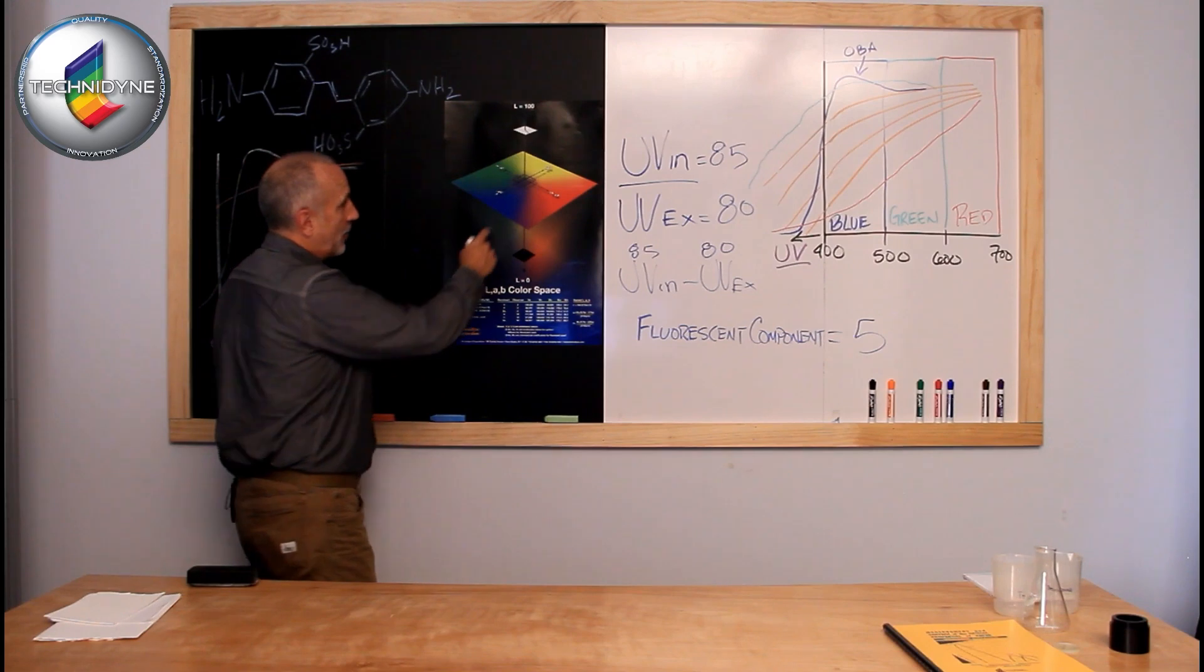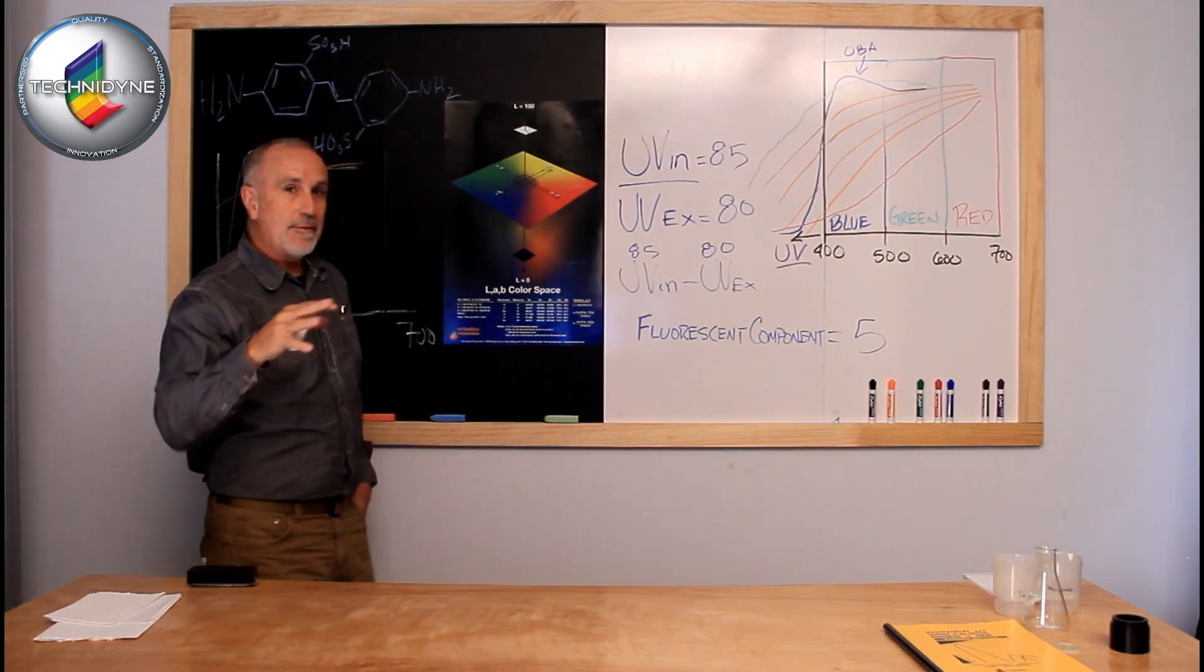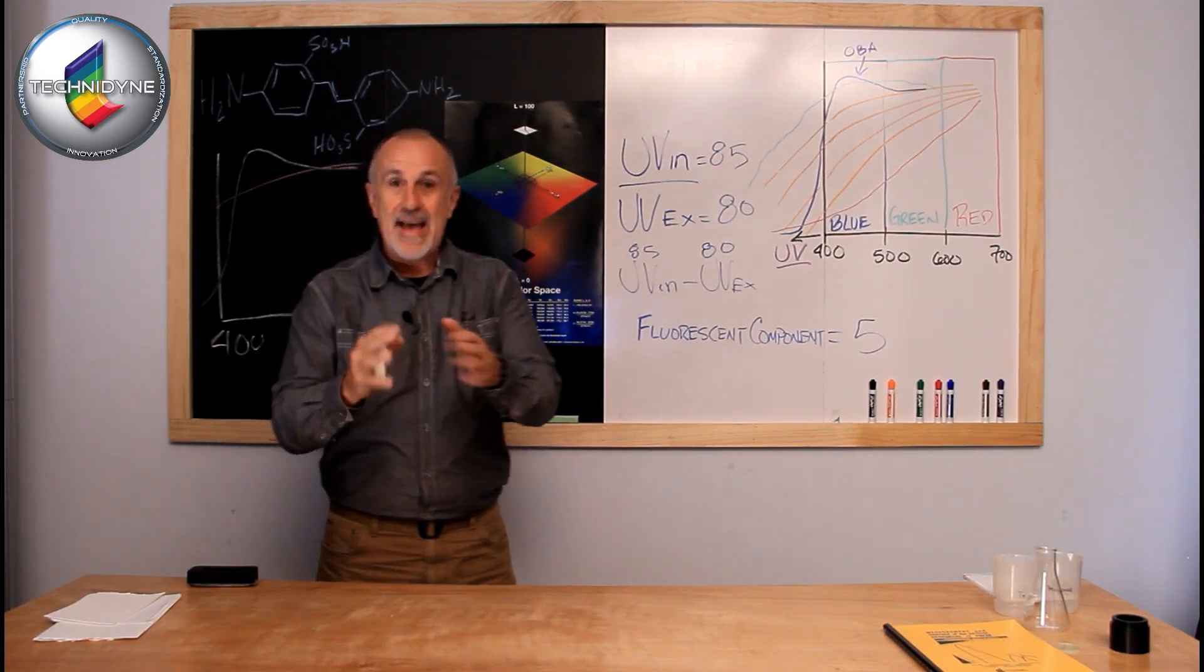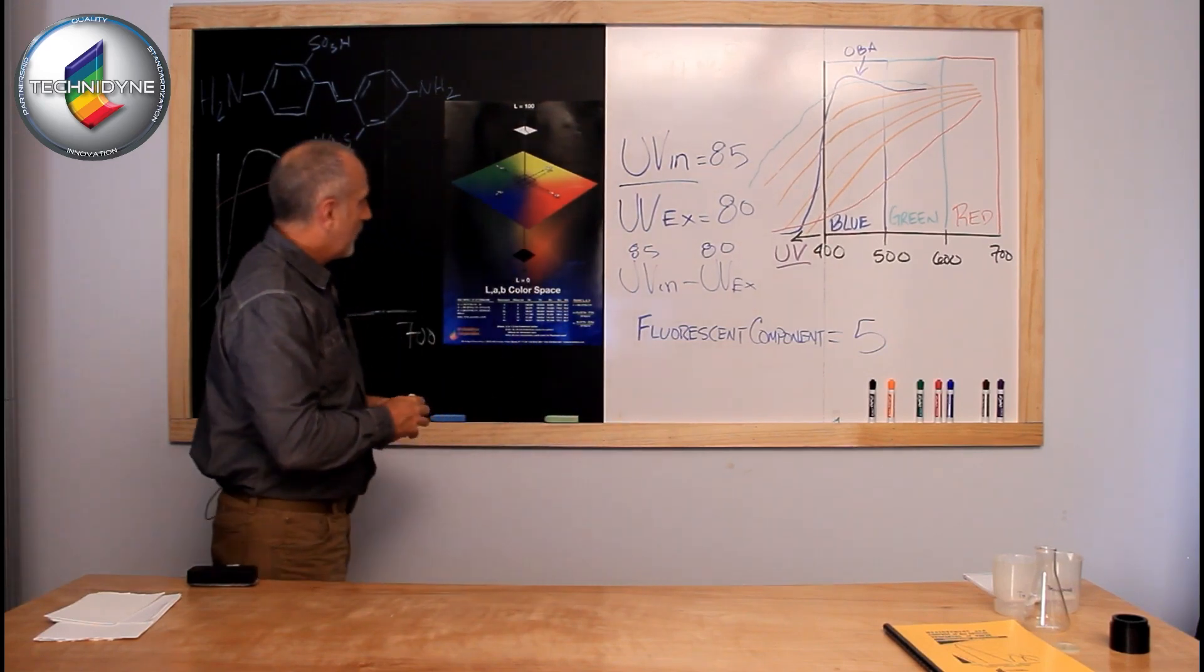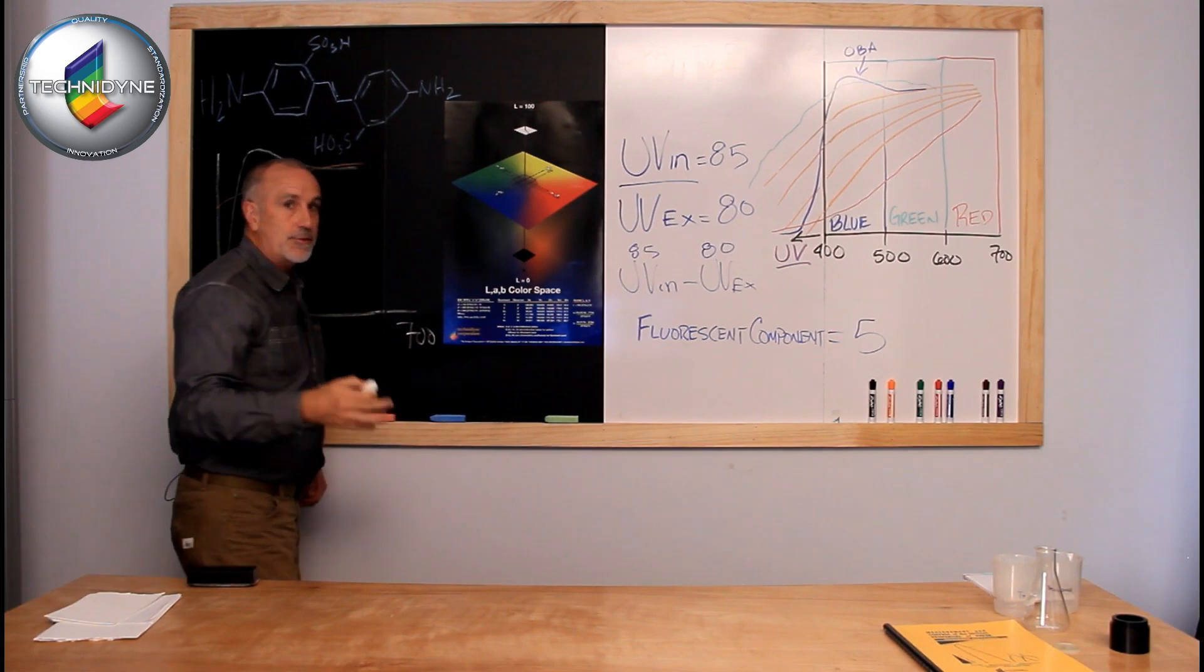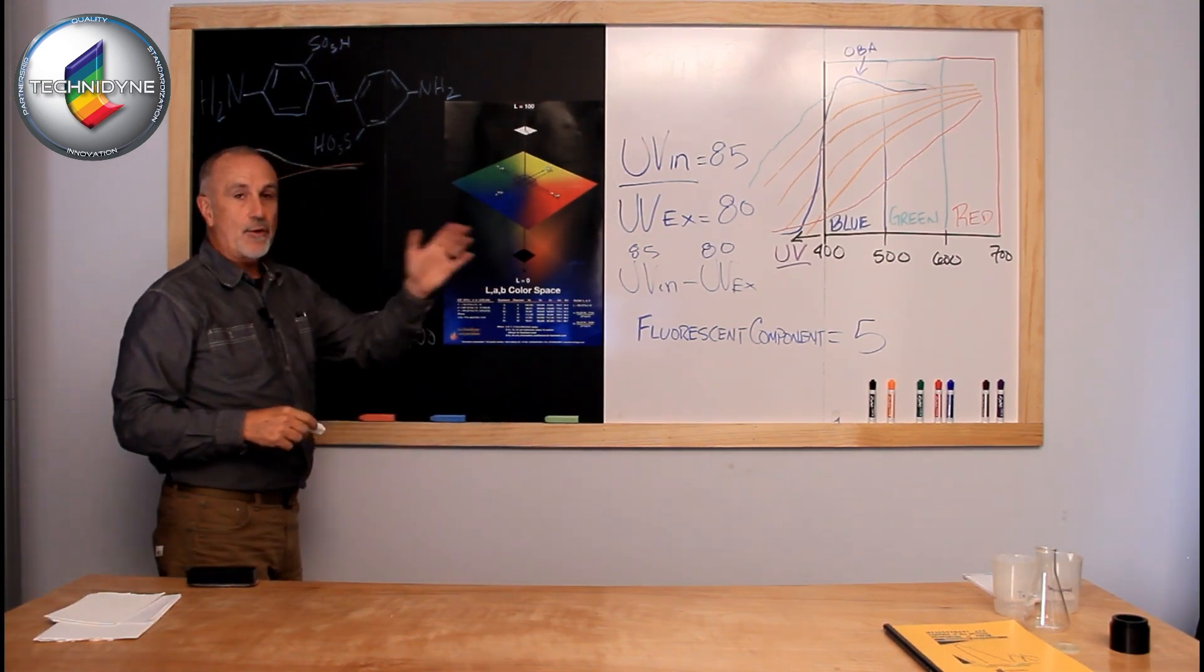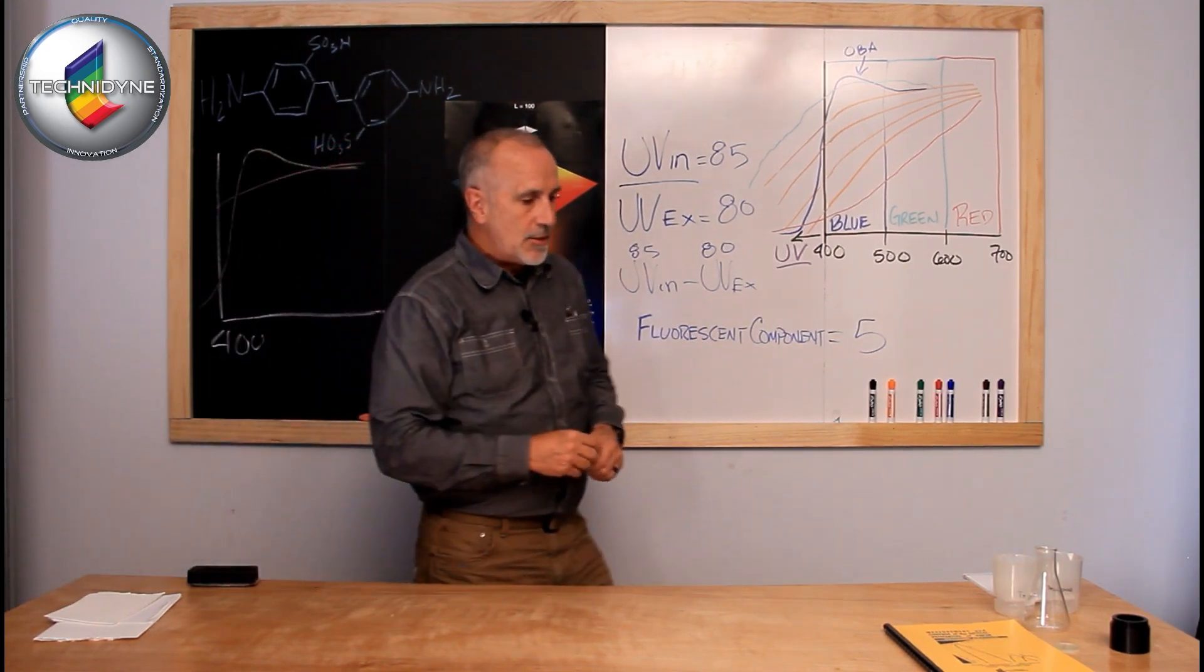Typically you will see a sample go bluer and slightly redder. Bluer with a slight tint of red means it's kind of going violet. It's getting that nice glow to it. So you'll typically see the L A and B values, or L star A star B star depending on which system you're using, go lighter, redder, bluer. That's the trend you're going to see.